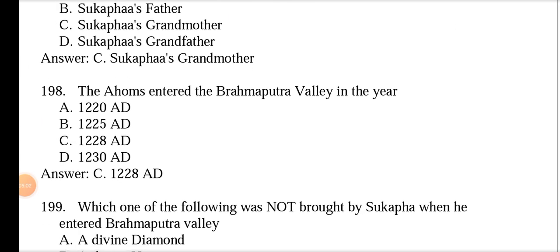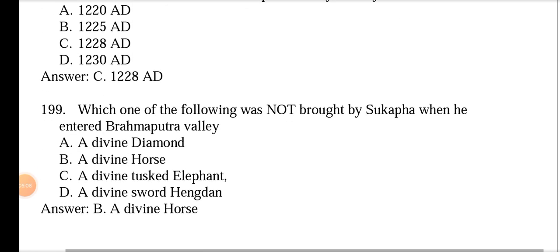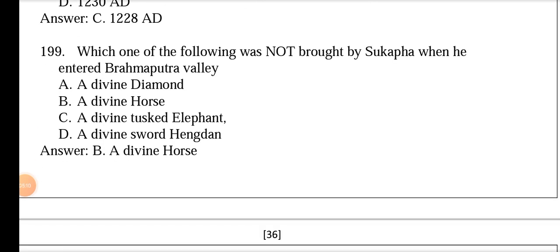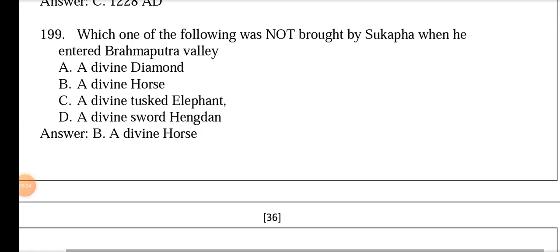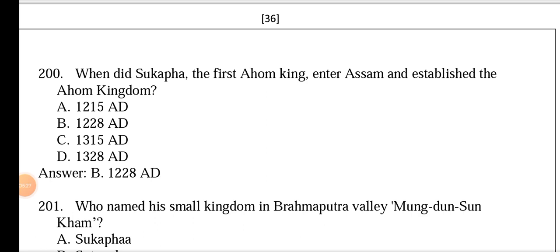The Ahoms entered the Brahmaputra valley in the year 1228 AD. When Sukafa entered the Brahmaputra valley, among the items brought, a divine horse was not brought. Sukafa, the first Ahom king, entered Assam and established the Ahom kingdom in 1228 AD. He named his small kingdom in the Brahmaputra valley as Mong Dun Sun Kham.